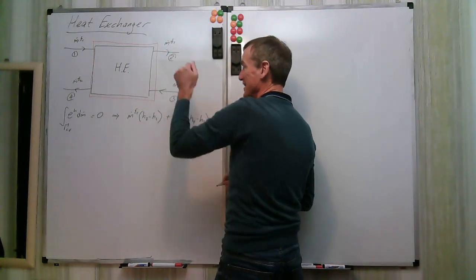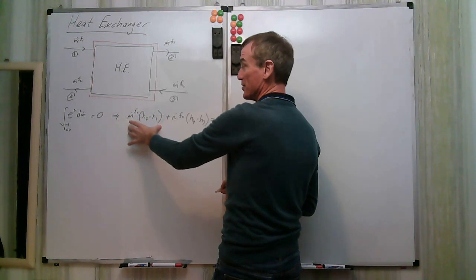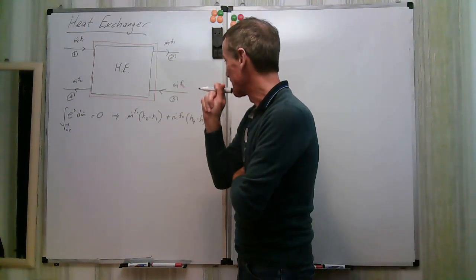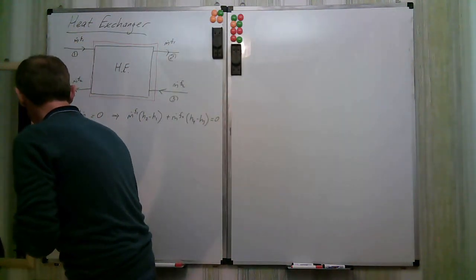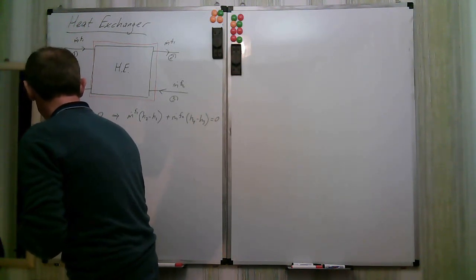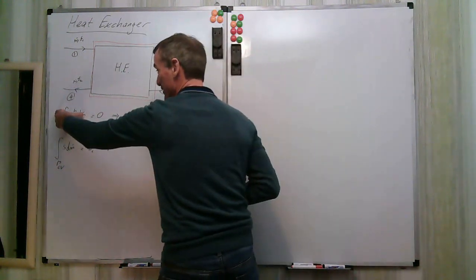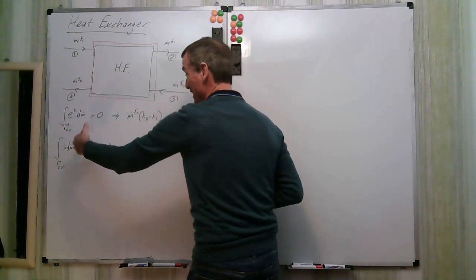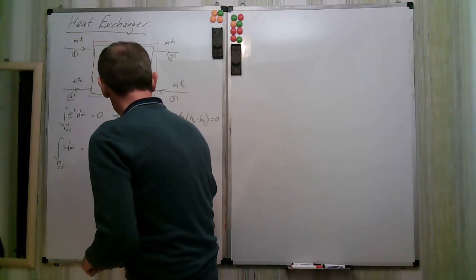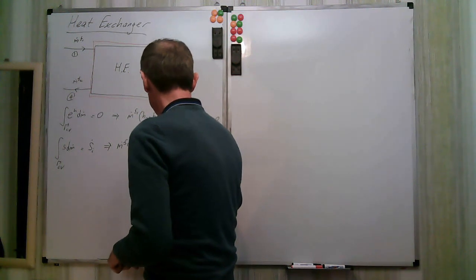Applying the steady flow energy equation: m-dot-f1 times (h2 minus h1) plus m-dot-f2 times (h4 minus h3) equals zero. This was the result from last time — exits carry positive signs, inlets negative. This is the one example where we have more than one entrance and exit.